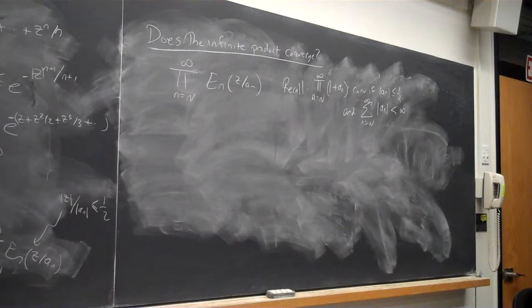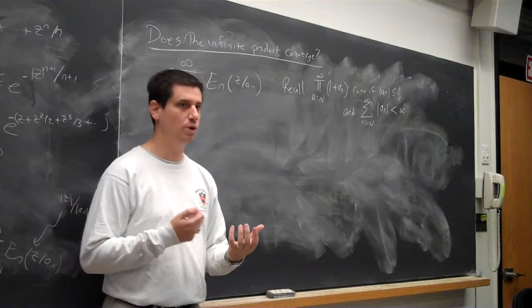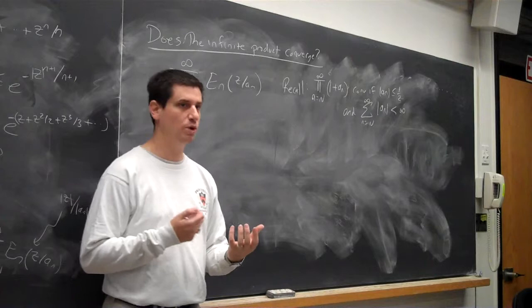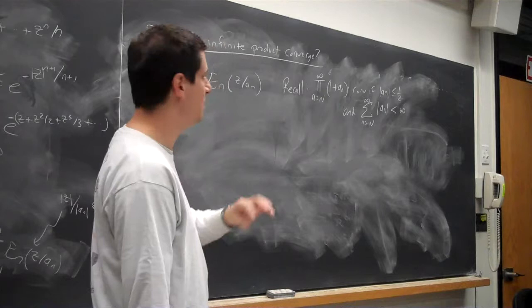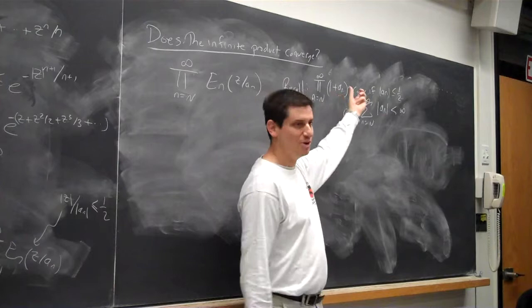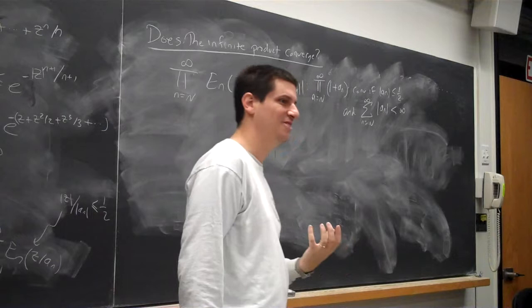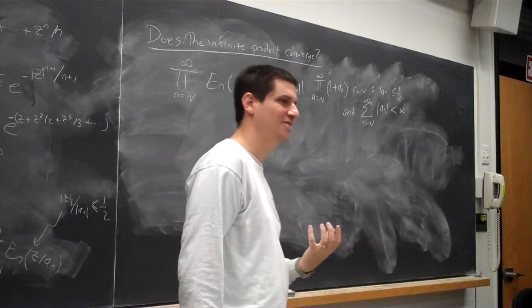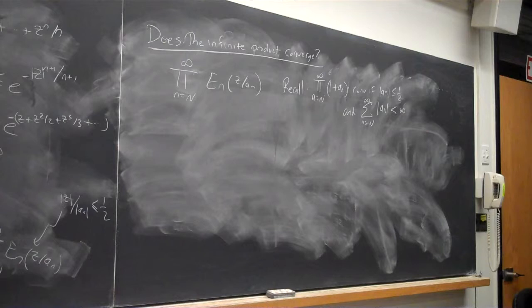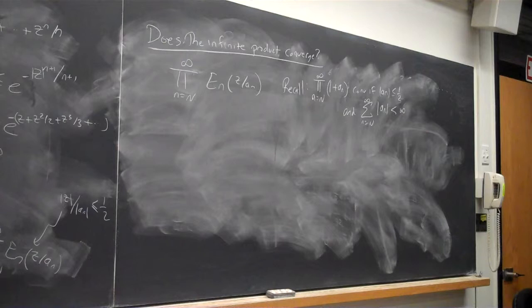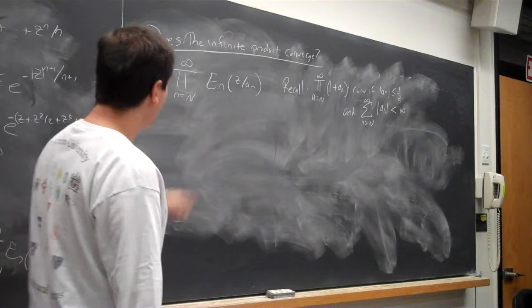The worst case is complete reinforcement. Whenever you're doing problems like this, you always want to think best case and worst case. The worst case is when all the a_n's are positive and everything is being added in the same direction. The best case is alternating — or actually all negative, which brings down the product as much as possible. But we saw that if the sum of |a_n| is finite then everything is okay. We did this using logs and expanding things out.